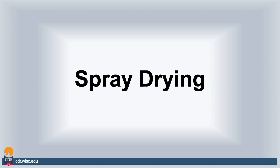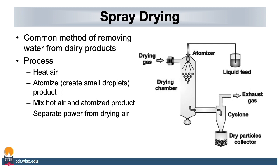Spray drying is the final method of processing that we will cover in this presentation. Spray drying is used to remove water from dairy products. This process is done by heating the air and using an atomizer to create small droplets of product. We mix the hot air and the atomized product to dry the product, and then we separate the powder from the drying air. In the picture on the right is a simplistic drawing of how a spray dryer works. The feed enters through the top of the dryer where gas or air is pushed into the drying chamber to dry the atomized product. The product is then pulled into a cyclone which separates the powder from the air.